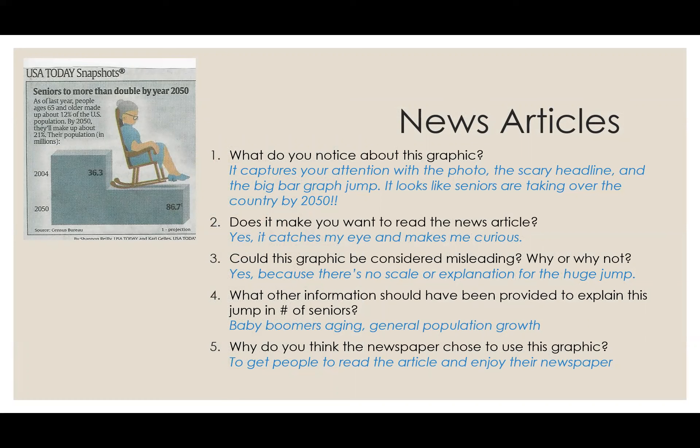Could this graphic be considered misleading? I'd say yes for a couple of reasons. One, there's no scale — we see the two years and the two values, but there's no scale on the y-axis or x-axis. So I don't know: does the scale start at zero? Is it going up by a consistent amount? It looks like there's a huge jump in 2050, but I'm not really sure if it's accurate because there's no scale. There's also no explanation for this huge jump — all it says is that seniors make up about 12% of the population in 2004 and will make up about 21% by 2050. They're excluding information, which can be misleading.